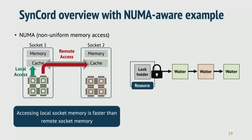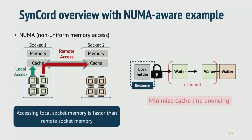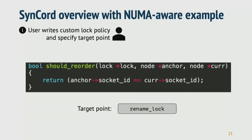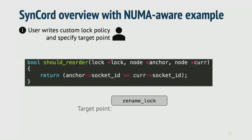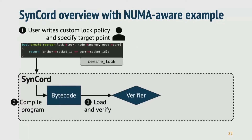Let's see the Synchrod overview with an example of implementing a NUMA-aware lock. Since local access is faster than remote access, grouping waiters from the same socket can achieve better performance by minimizing cache line bouncing. For the first step to develop a lock policy, users create lock policy in C-style code and specify the target point to modify. Then the code is passed to Synchrod, which takes care of everything else from there. Synchrod compiles the user's program into byte code and passes it to the eBPF verifier to check whether the given code is safe to install in the kernel.